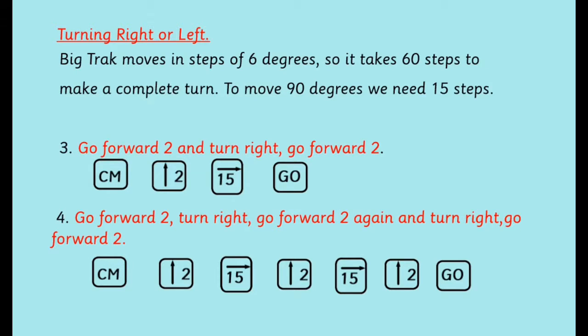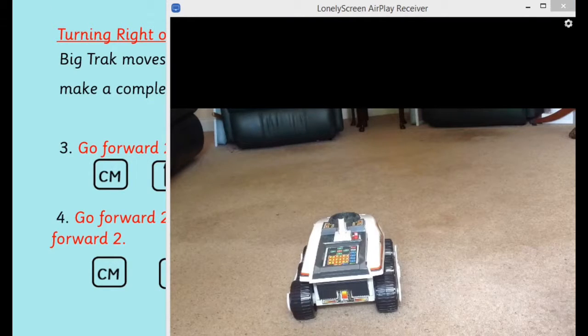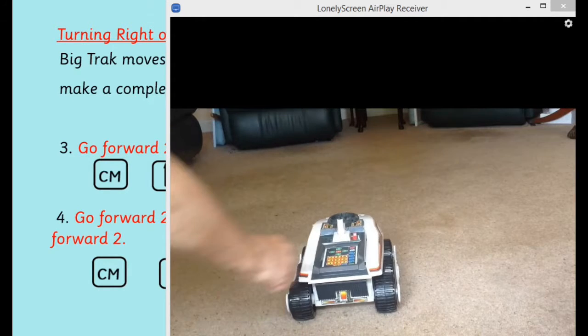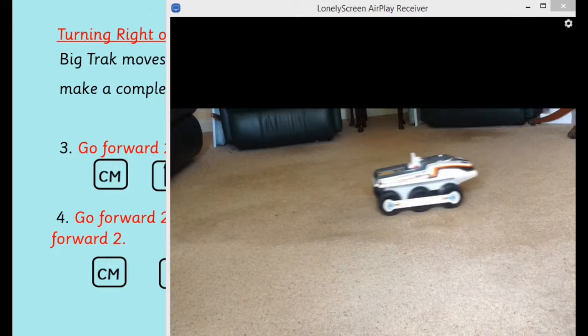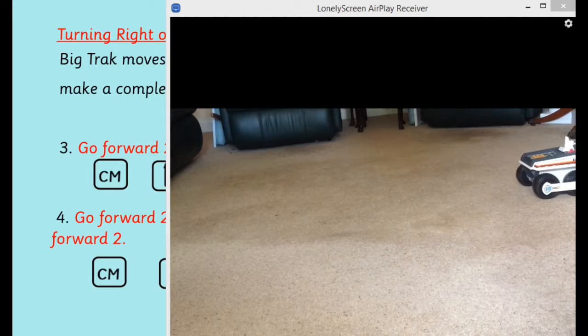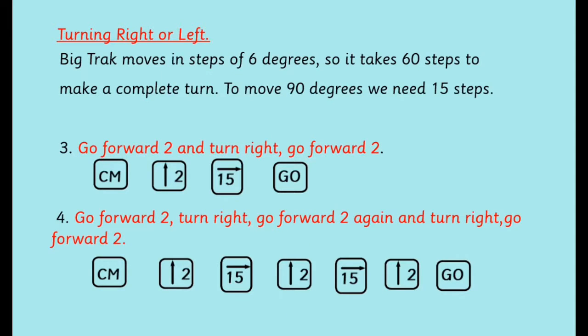So we'll try that. In the second one we go forward two, turn right, go forward two, and turn right again and go forward two. So similar to the first program: CM of course, forward two steps, right 15 steps, forward two steps, right 15 steps, and forward two steps, and go.